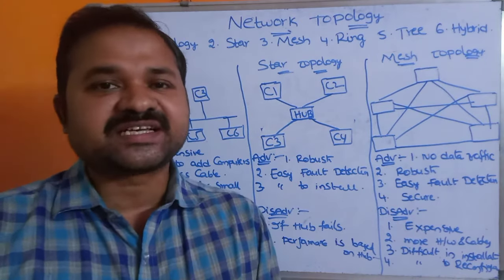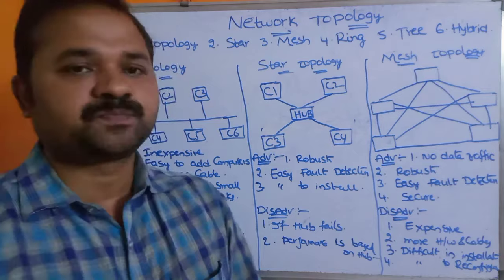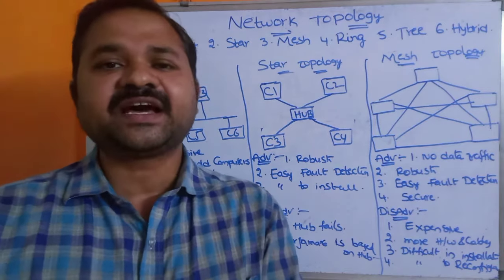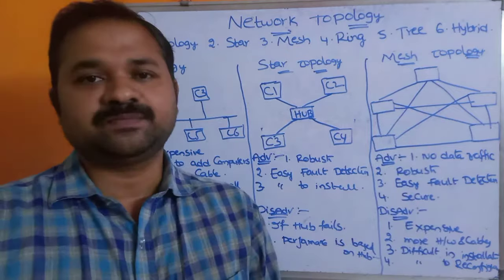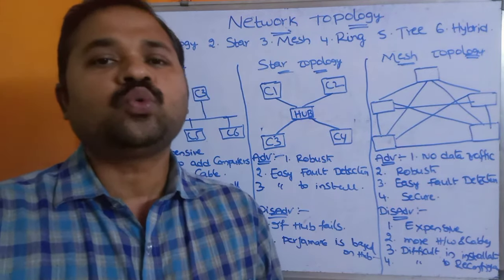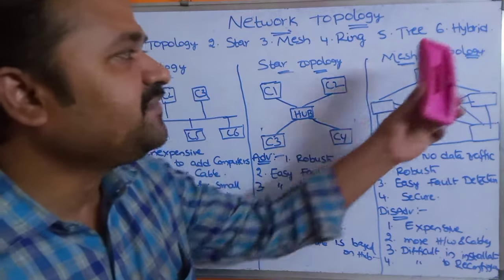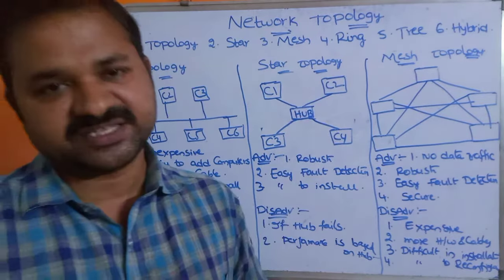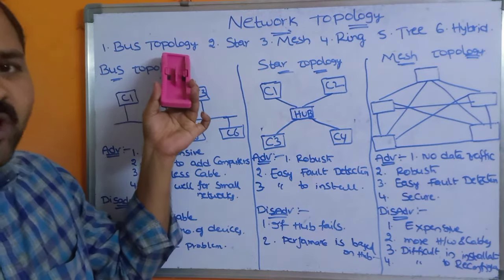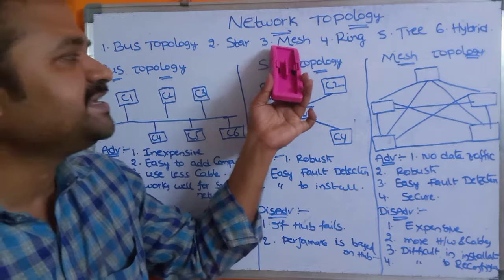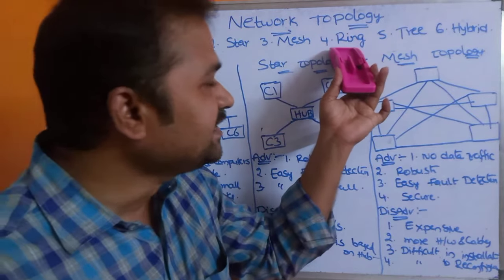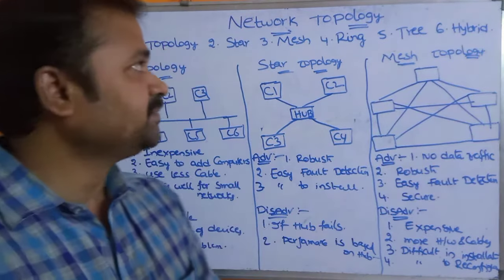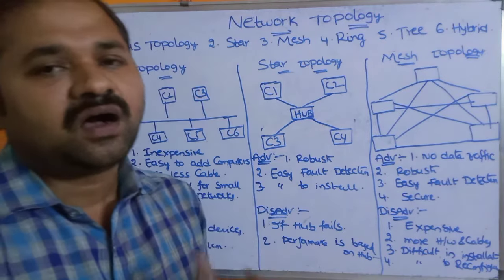In this video we are going to discuss network topologies. A network means a collection of computers which are interconnected together. A topology specifies how the computers are connected. Mainly we have six types of topologies: bus topology, star topology, mesh topology, ring topology, tree topology, and hybrid topology. Each topology specifies the arrangement of computers.